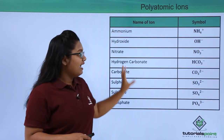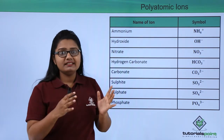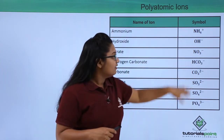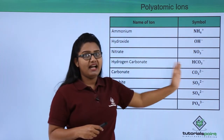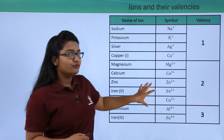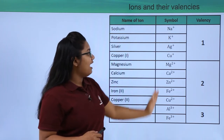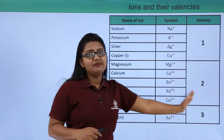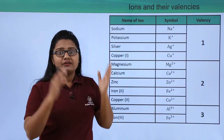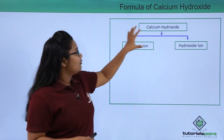I have put all these ions in a table, and we are going to use this table as a tool for writing the chemical formula of compounds. On this side there is a notation of these polyatomic ions and their charges. The second tool we are going to use is another table that has monoatomic ions with their charges and valencies.